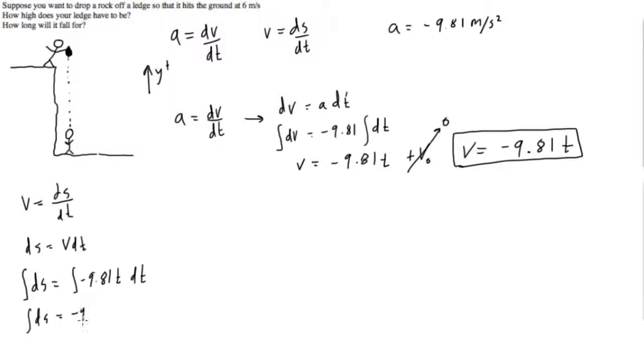So we get ds is equal to negative 9.81 integral of t dt. We're running out of space so we're going to come up here. So integral of ds is just s, we will have the integration constant but we'll see that in two seconds.